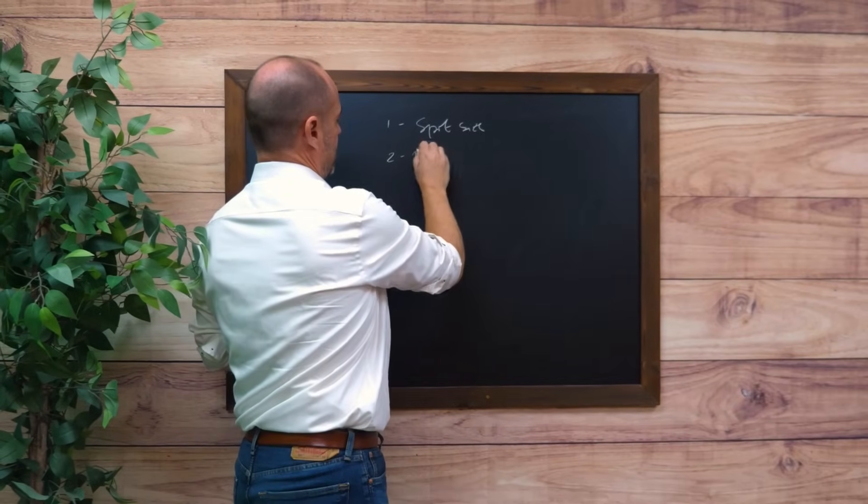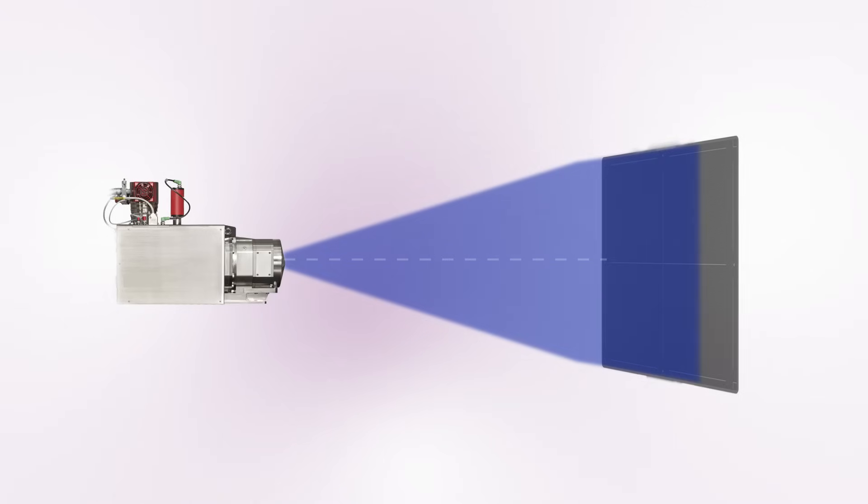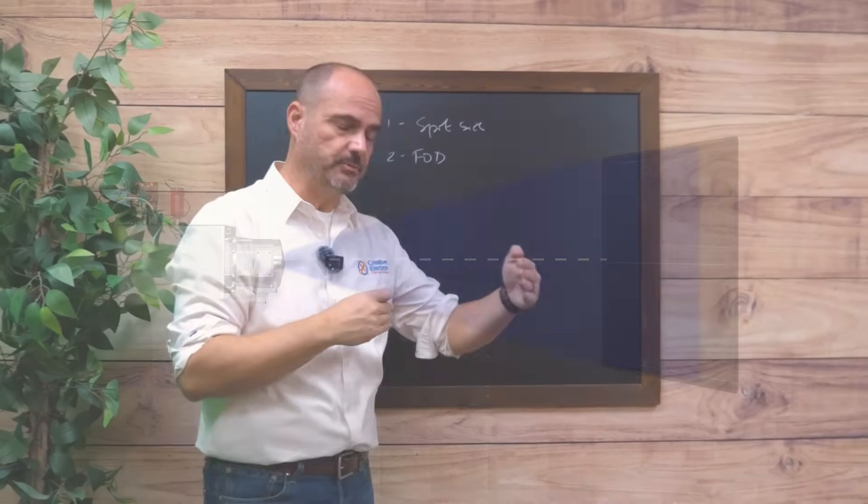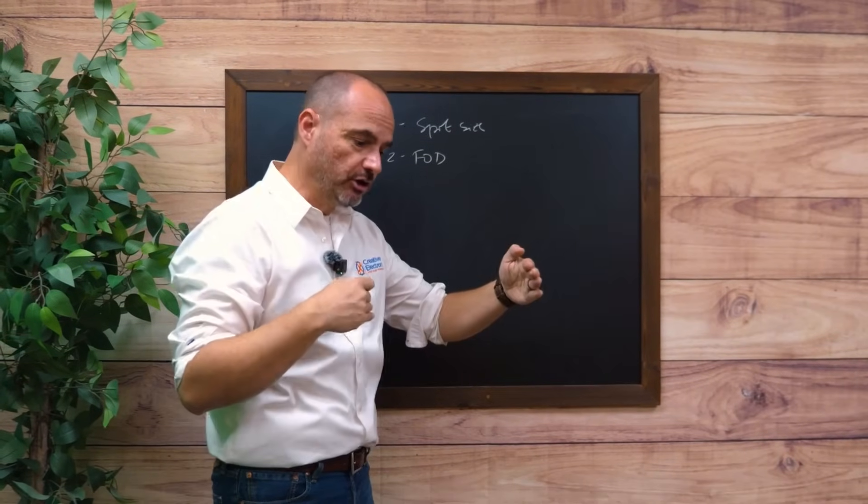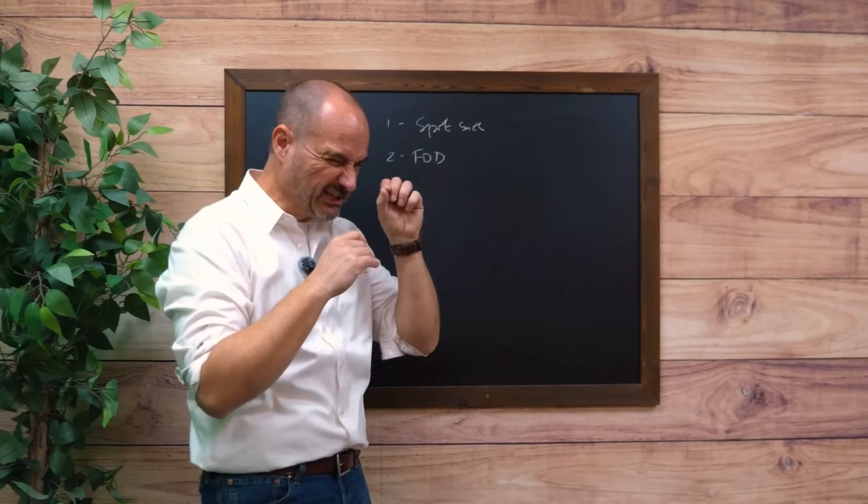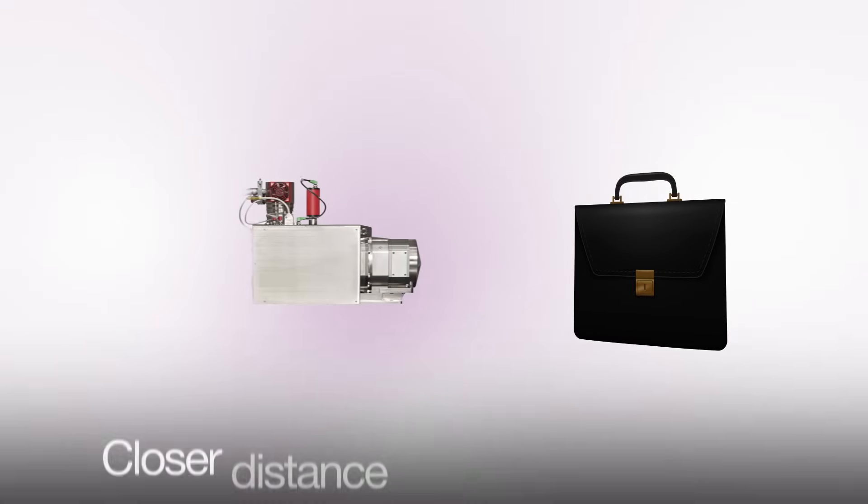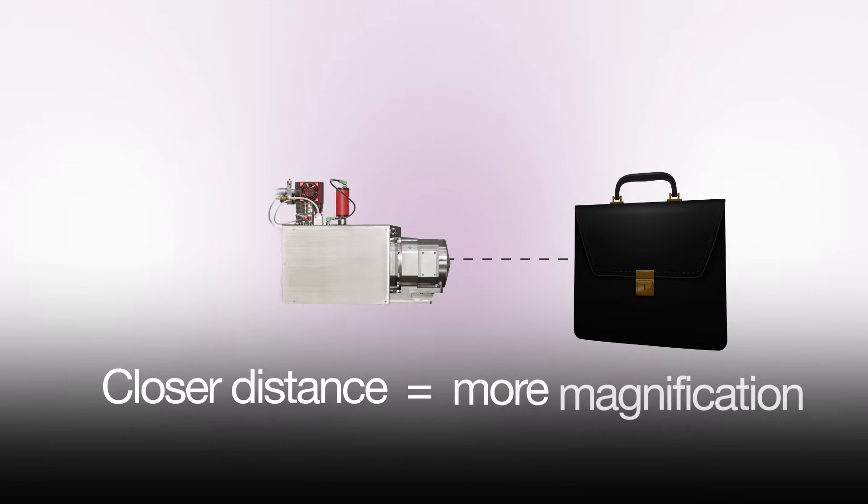The second is FOD, or how far the target of the x-ray source is from the object we're trying to image. The closer you can get the source to the location where the reflection, transmission, and creation of x-ray photons occurs, the more magnification you can achieve.